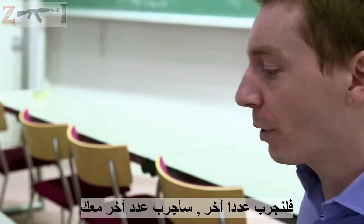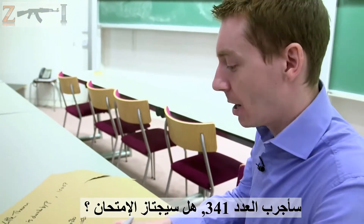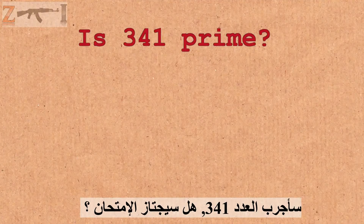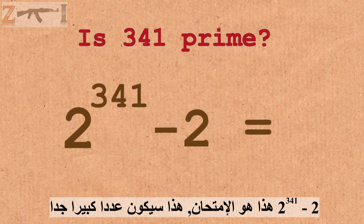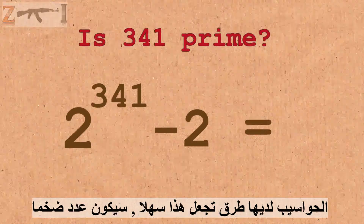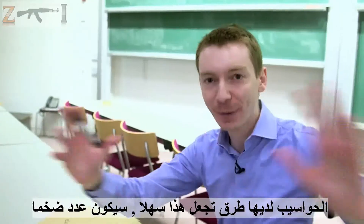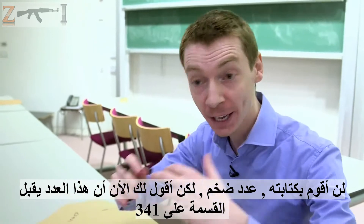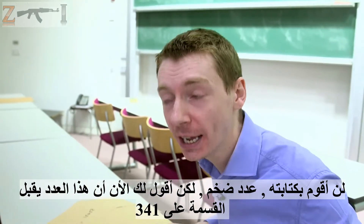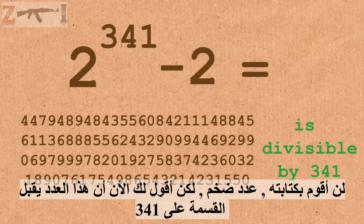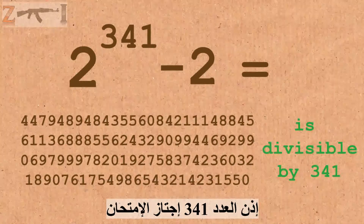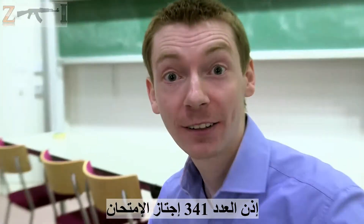Let's try another number — I'll try 341. Does it pass the test? 2 to the power of 341 minus 2 — that's going to be a really large number. Computers have methods that make this easier. But I can tell you that this number is divisible by 341. So it's passed the test.